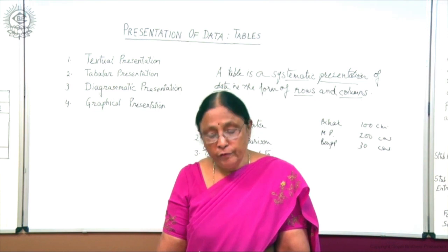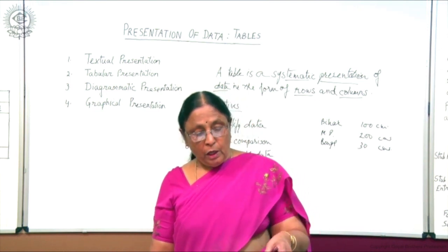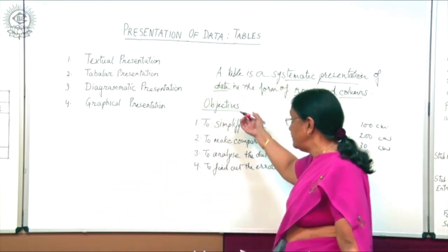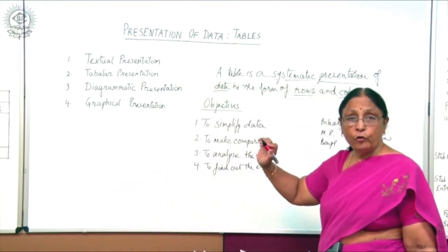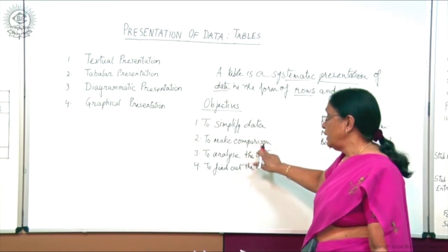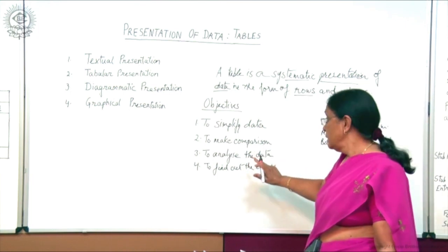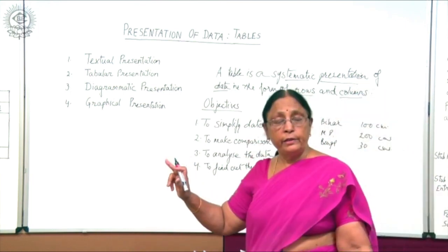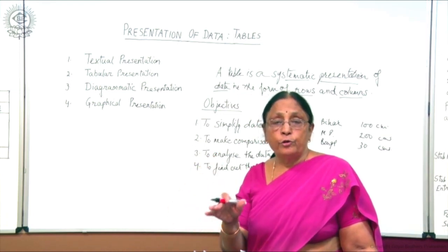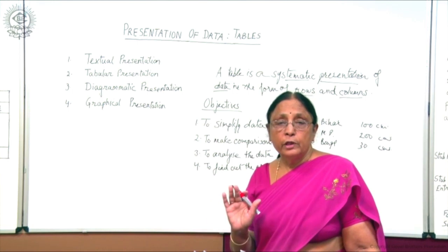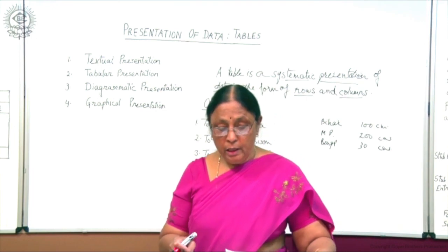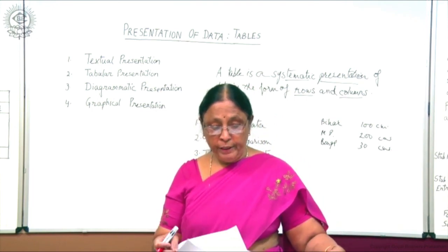These are the objectives of tabulation. It makes data simple to understand, makes comparison easy, enables analysis of data, and helps in finding out errors. This is the importance and objectives of tabulation of data. Now we will see how the table is made.